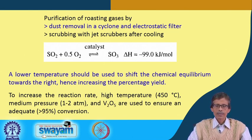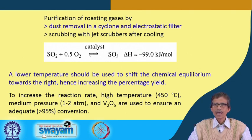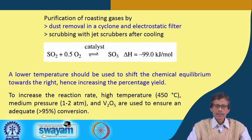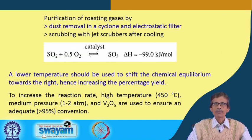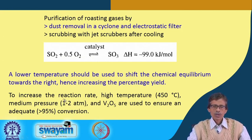V₂O₅ is a well-known, common textbook catalyst that is still in use and is cheaply available. It is an oxidic material of vanadium — vanadium pentoxide — and gives an overall conversion of 95%. The optimized conditions are a temperature of 450°C and a pressure of 1 to 2 atmospheres with this catalyst.